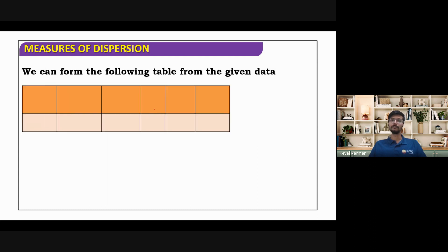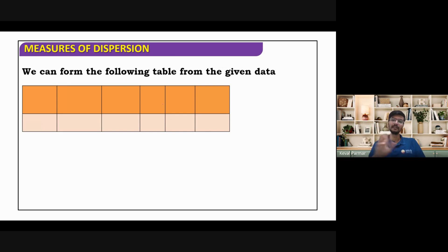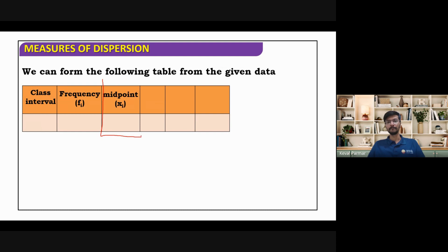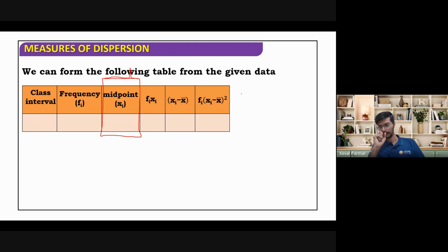We can form the following table. Only one column will be extra — the midpoint column. The rest of the columns remain the same: class interval, frequency, midpoint xi, then xi minus x-bar, and fi times (xi minus x-bar) squared.